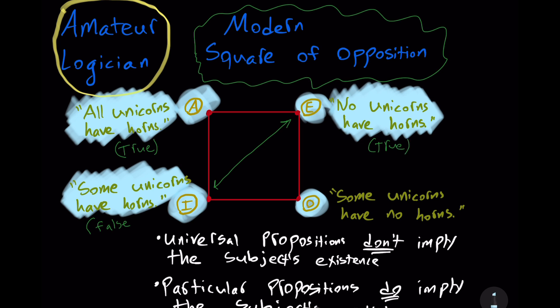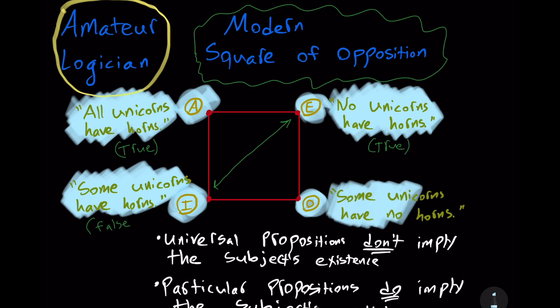Finally, consider 'some unicorns have no horns.' Since that type of proposition implies existence, and unicorns don't actually exist, we must treat this proposition as false.